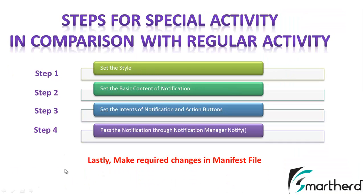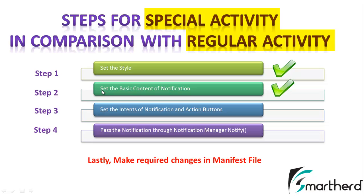These were the steps we followed in the case of regular activity. Now let me show you the step-by-step differences between special activity and regular activity. In both cases, step 1 is to set the style — this is the same. Step 2 is also the same: set the basic content of the notification. Step 3 is to set the intent of the notification and action buttons. The code for step 3 in the case of special activity and regular activity is quite different.